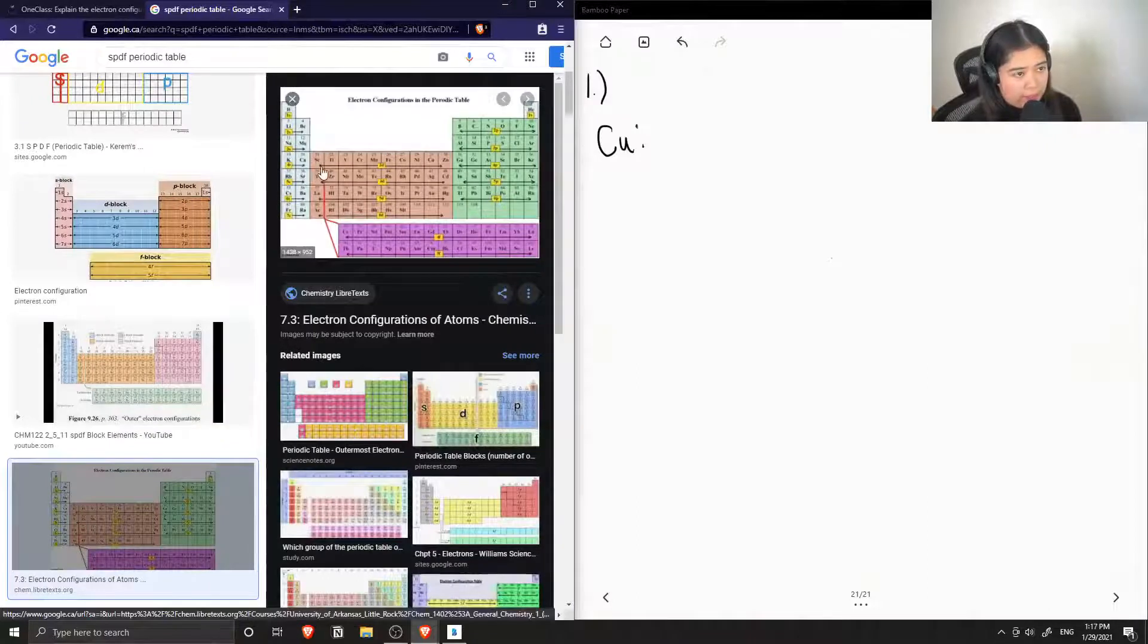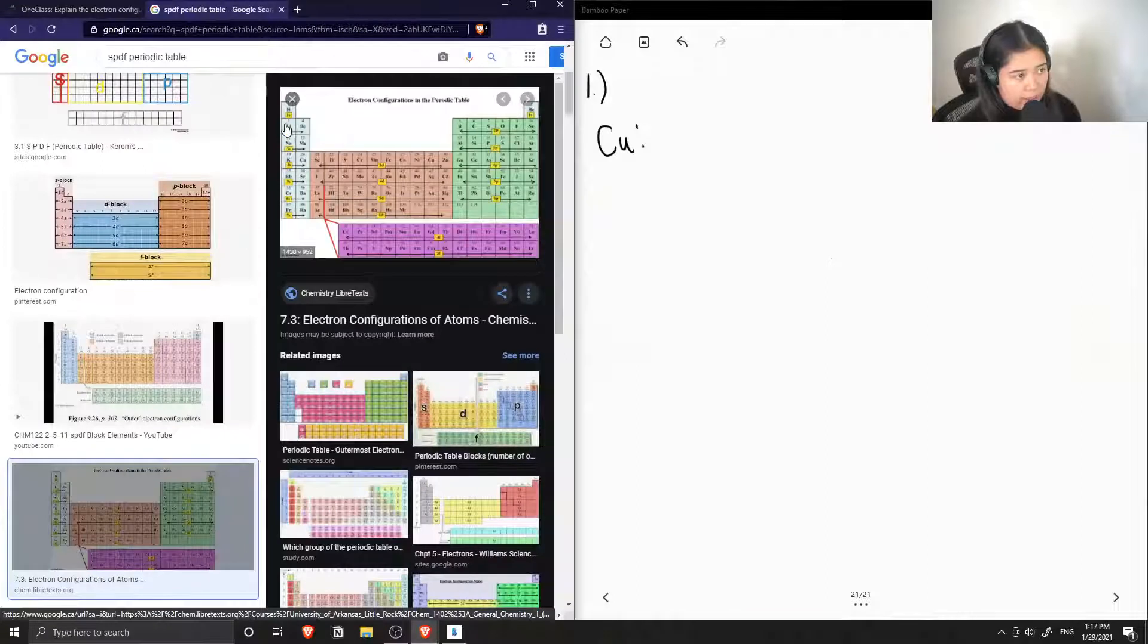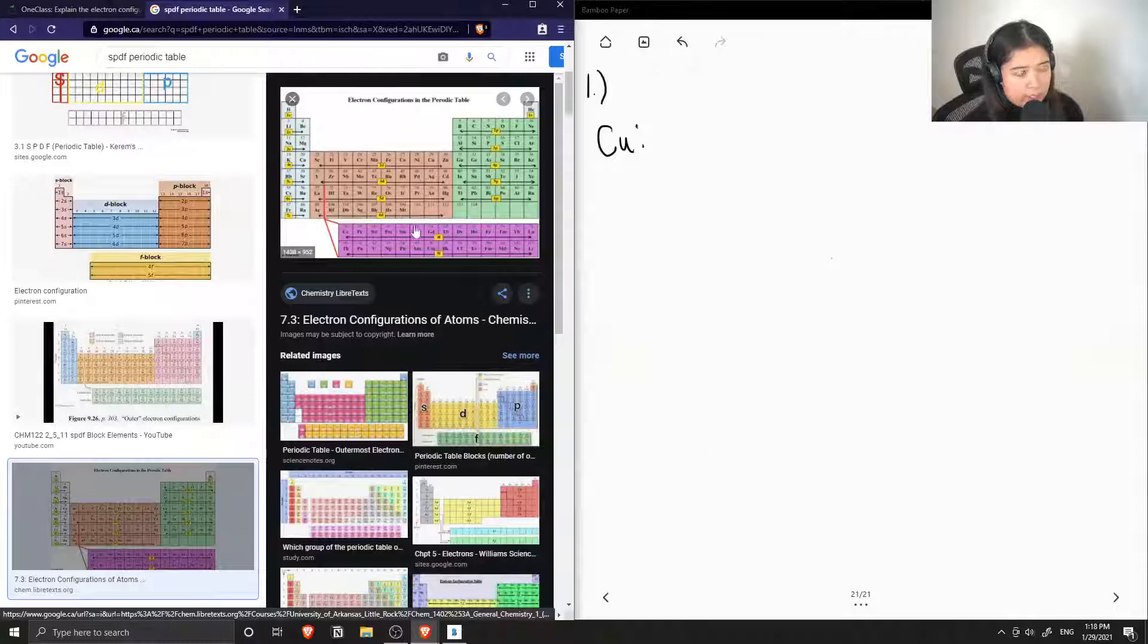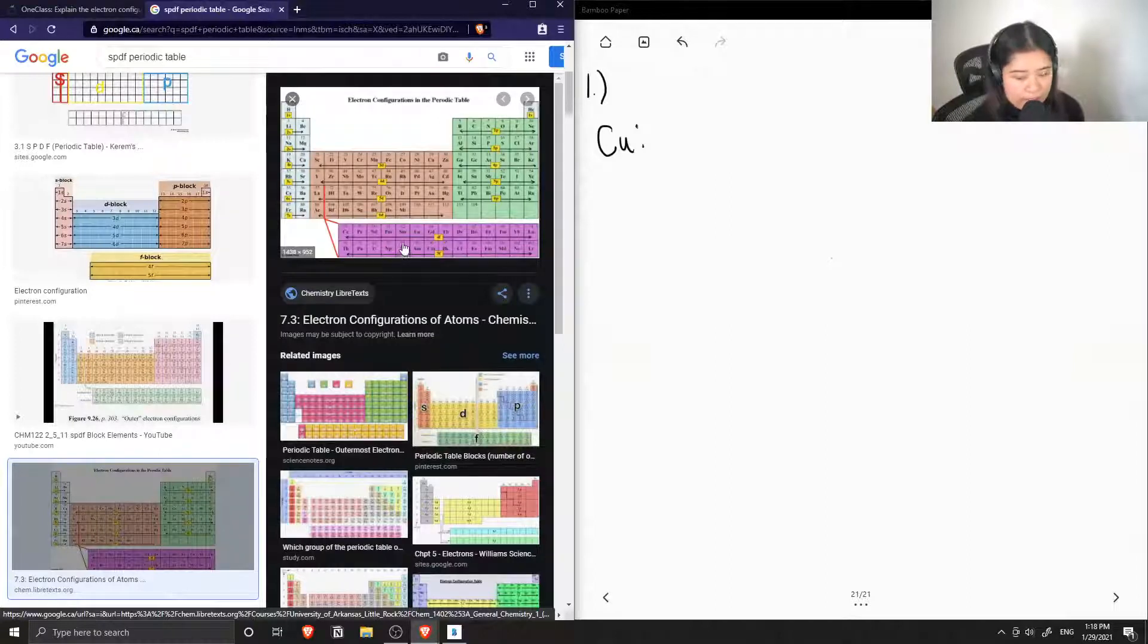Here's an example of the periodic table and how it is divided into the S block, which are the first two columns here, and the P block, which is this green section. The D block are the middle transition metals, and the F block are these last two rows, which are the lanthanides and actinides.